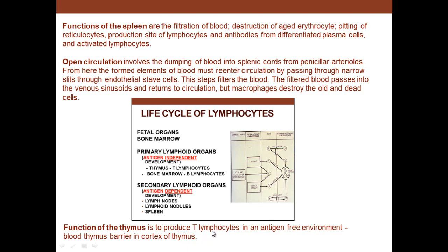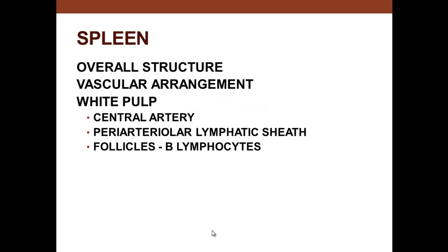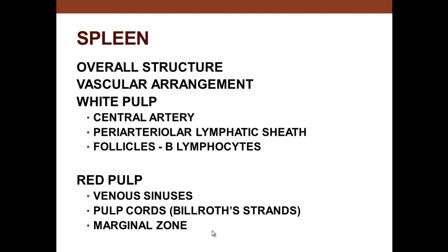Looking at the spleen's overall structure, the white pulp consists of a central artery surrounded by a periarteriolar lymphatic sheath, with follicles containing B lymphocytes. The red pulp contains venous sinuses and pulp cords — the Billroth strands. The marginal zone is a very important region where whole blood is dumped into the extravascular space.